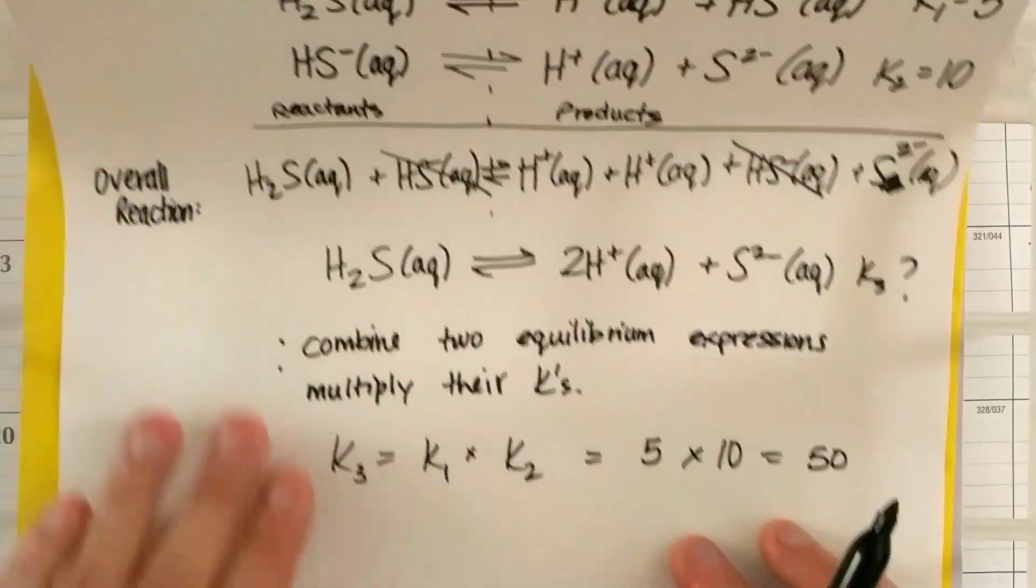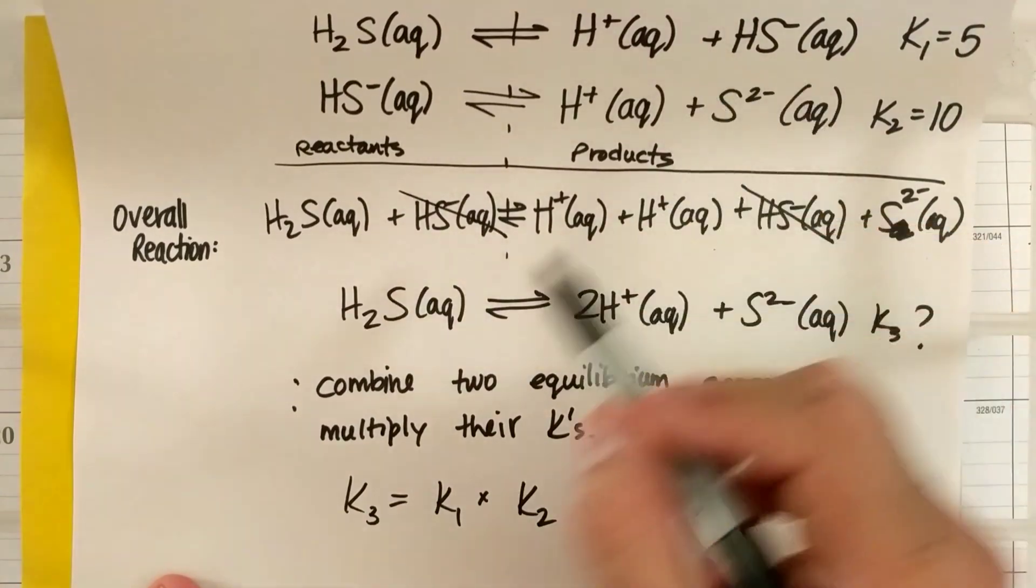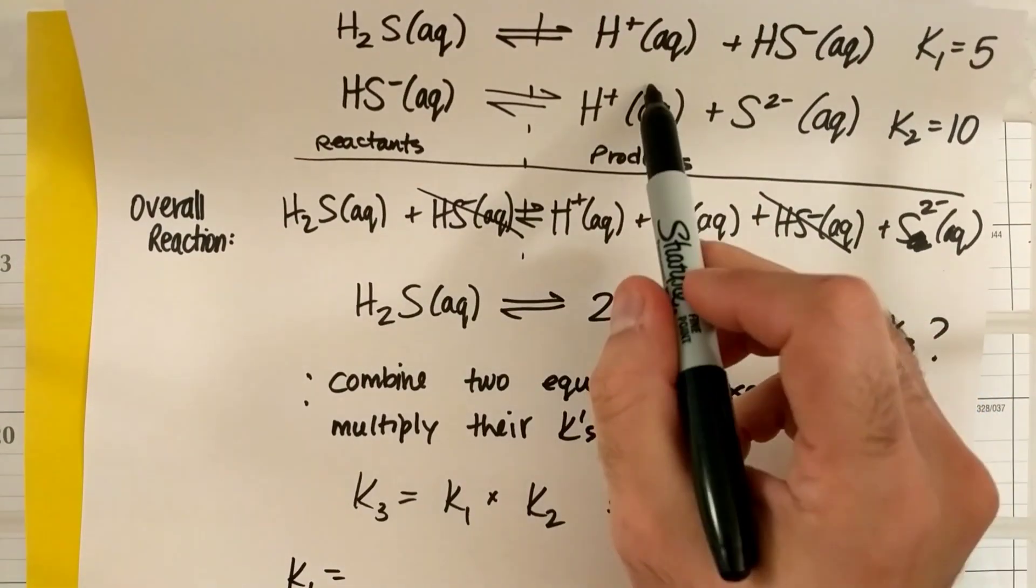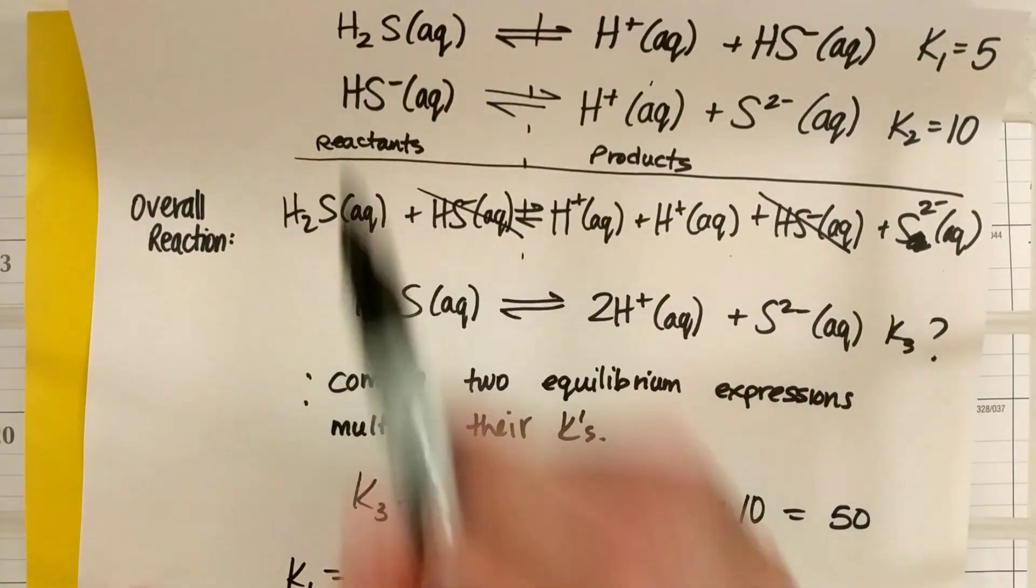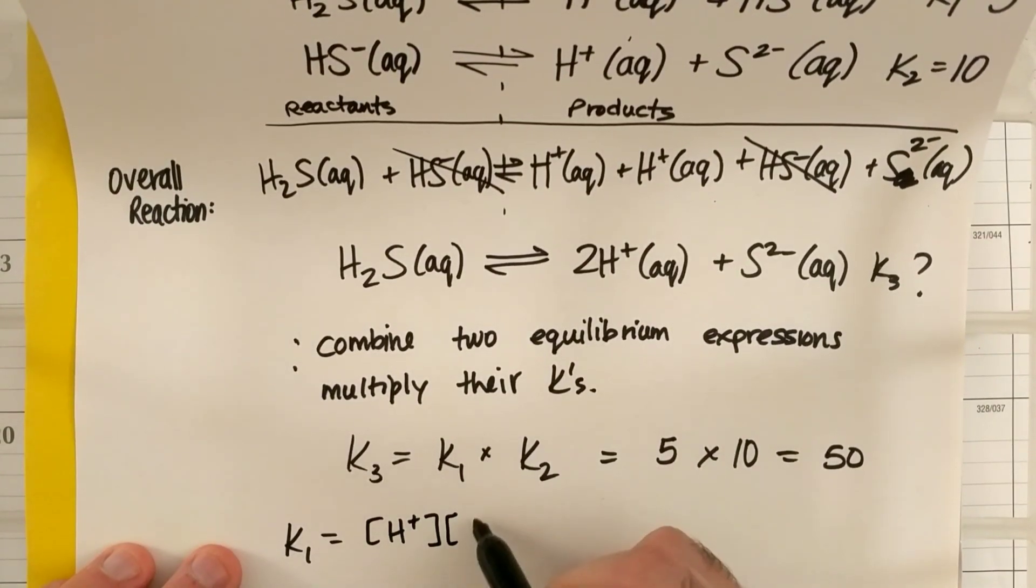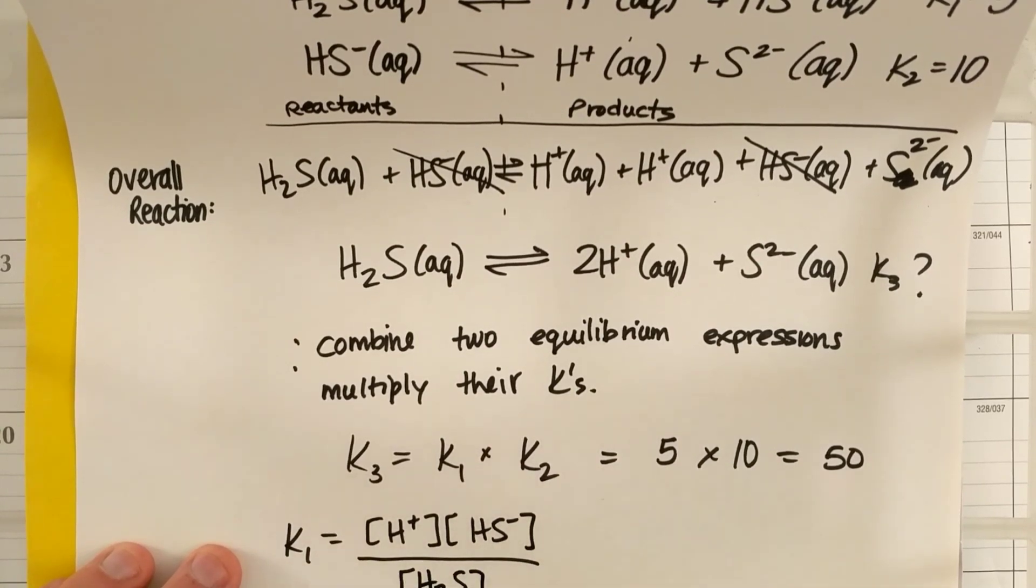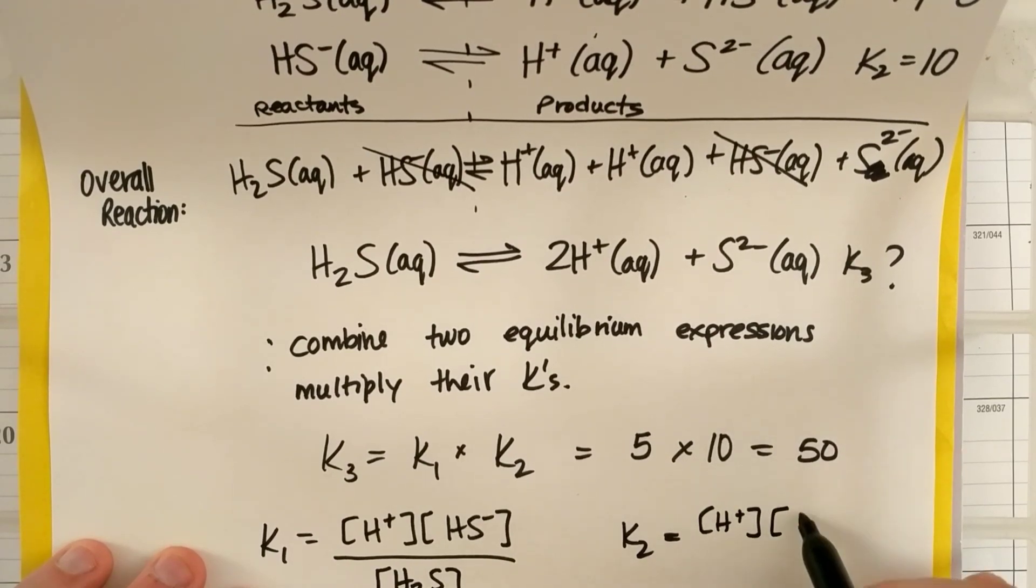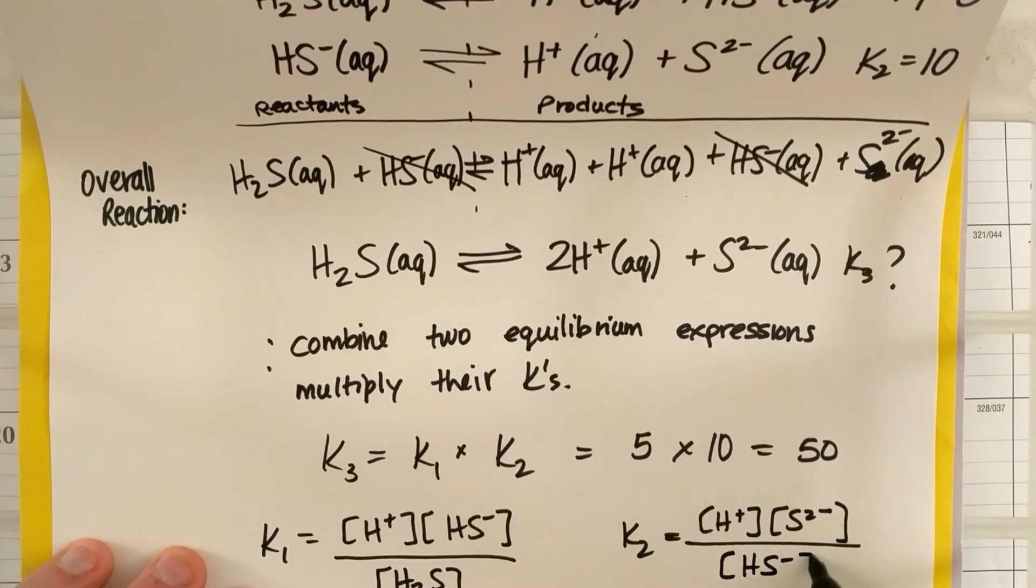To prove that, I mean, I want to still draw equilibrium expression so we know that. If I want to do the equilibrium expression for K1, it's just H plus HS minus over H2S because it's products over reactants. So H plus concentration of HS minus, all over concentration of H2S. And then my K2 would equal concentration of H plus, concentration of S2 minus, all over the concentration of HS minus.